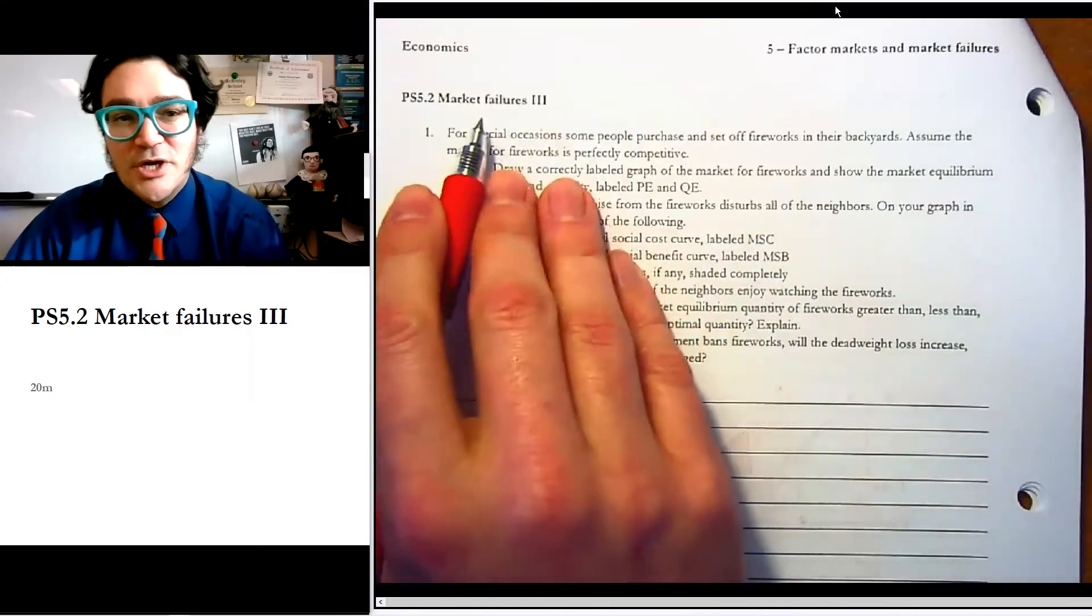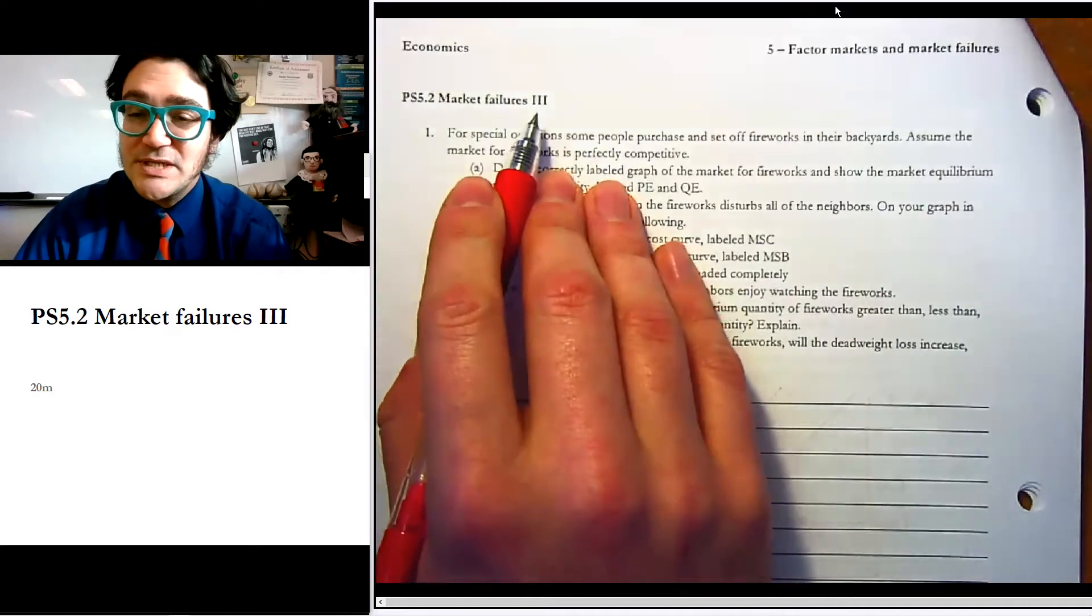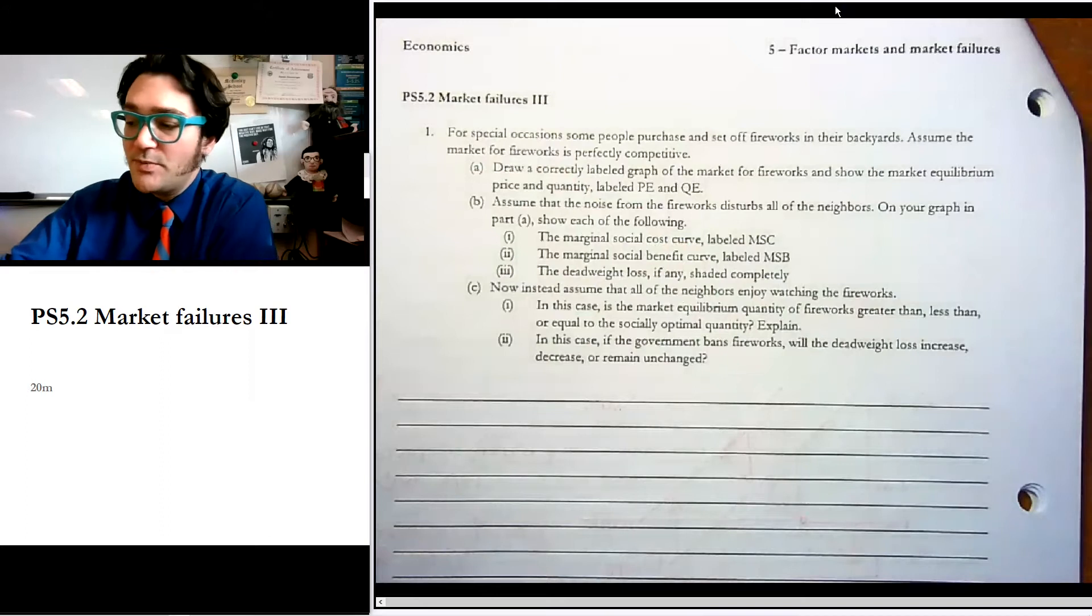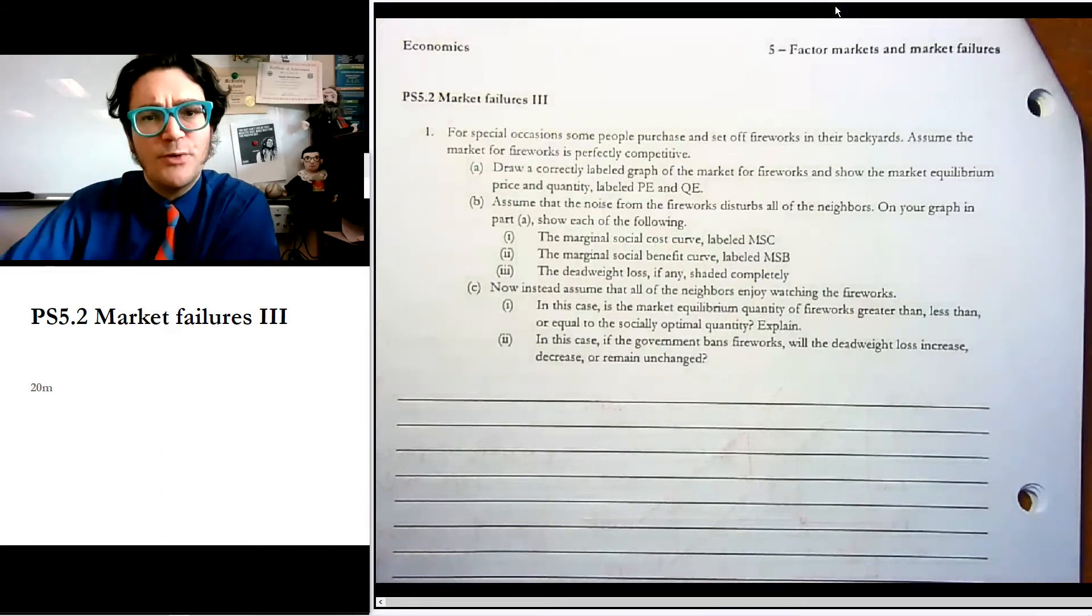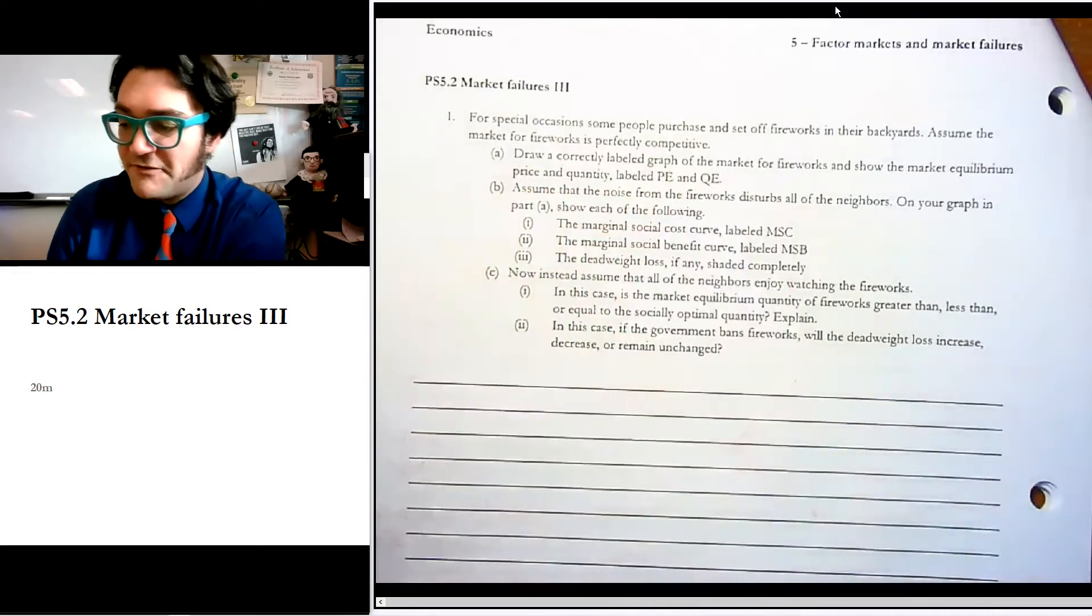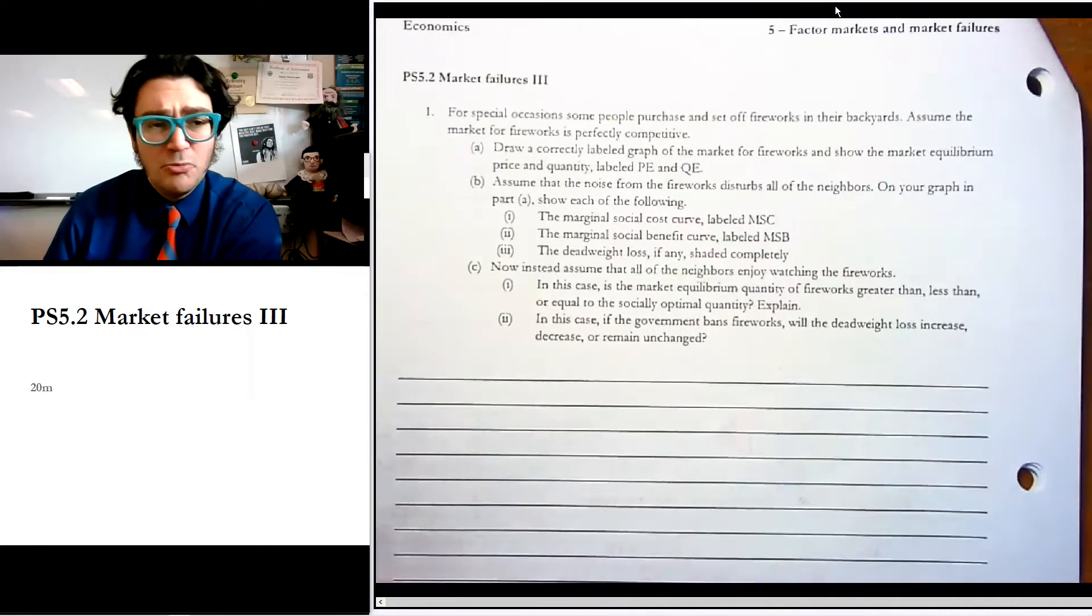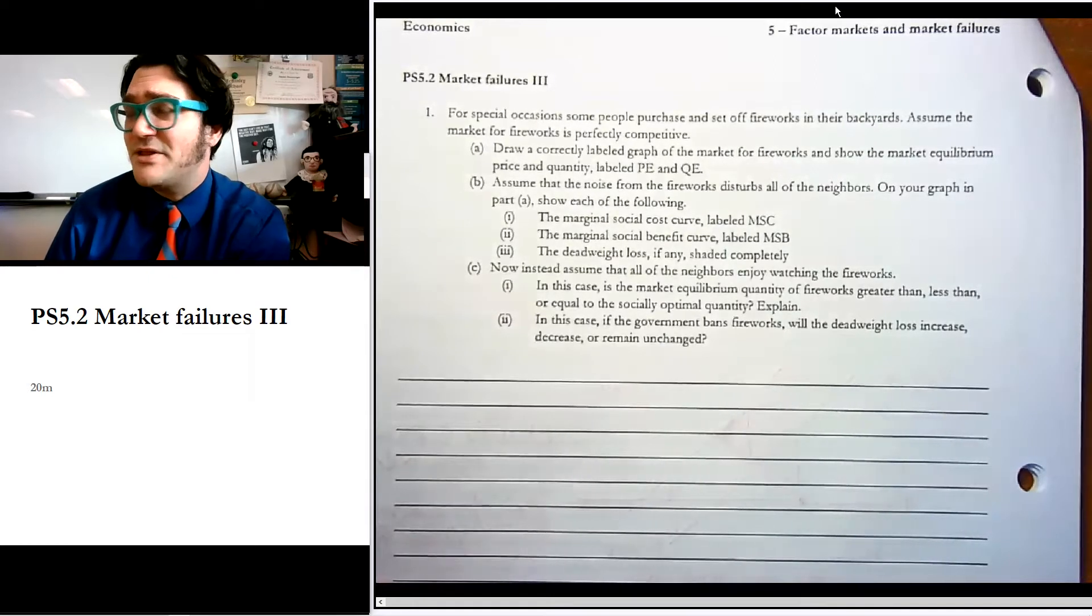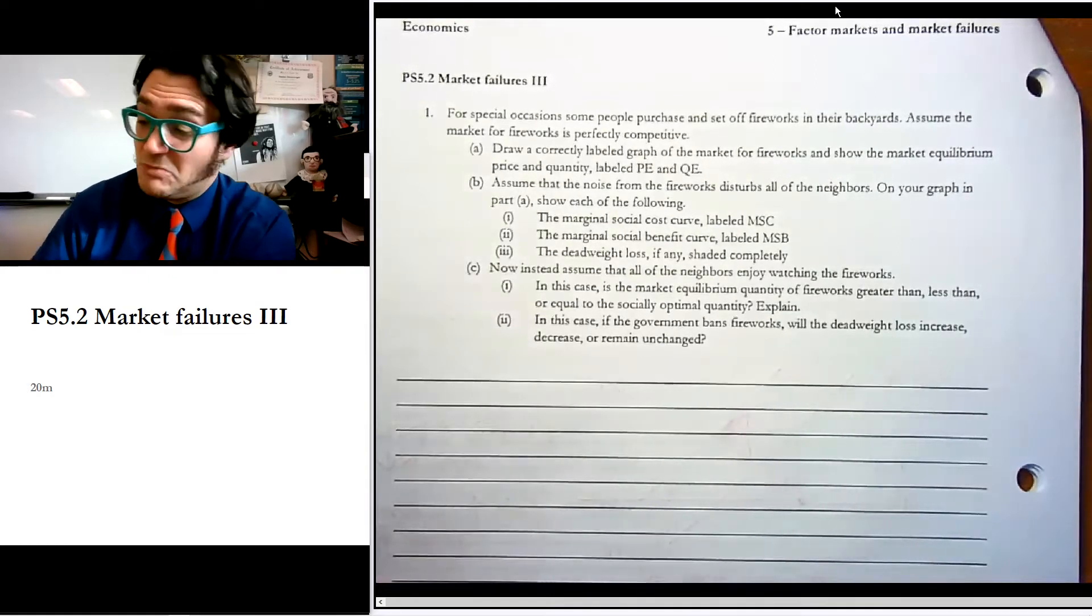Hello there. So in this video, we're going to talk about market failures again. It's the very last problem about externalities. And again, it's an AP problem that I think is helpful to kind of give you the picture of what we're looking at. So it says for special occasions, some people purchase and set up fireworks in their backyards. What could that be? Maybe a baby shower, a wedding shower? I don't know. It's my 30th birthday and I want some fireworks. Who knows?